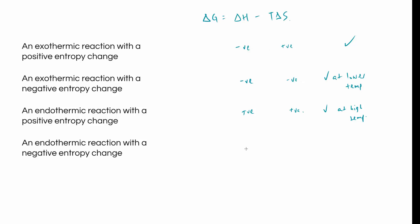Finally, for an endothermic reaction with a negative entropy change: delta H is positive and delta S is negative, so we're always subtracting a negative — effectively always adding two positive numbers together. Delta G will never be negative, so this reaction is always unfeasible regardless of temperature.